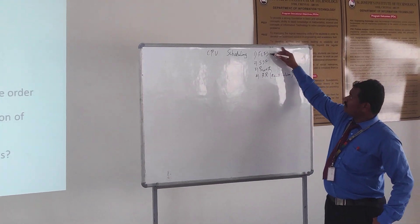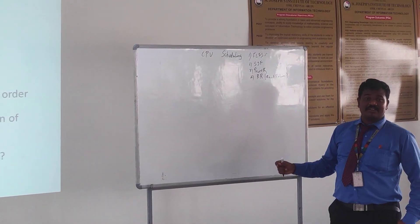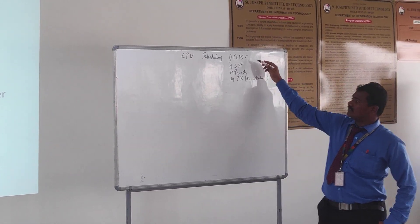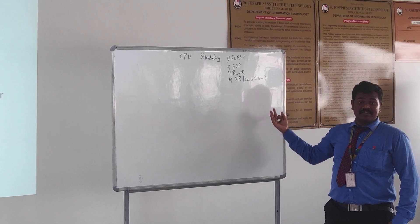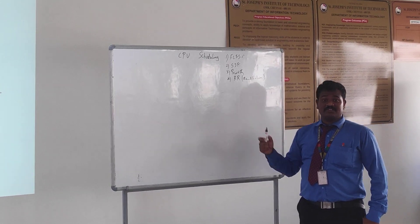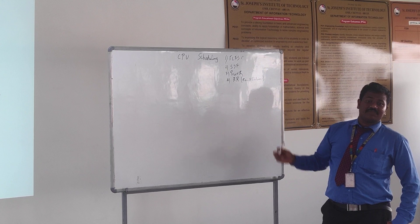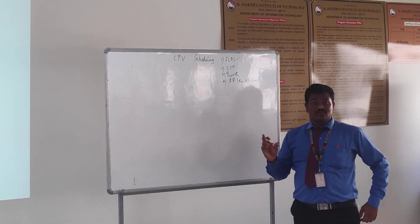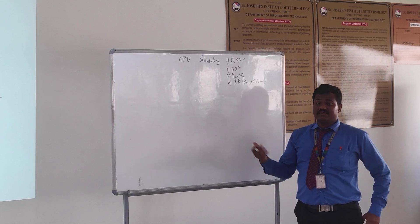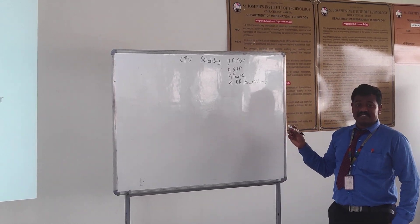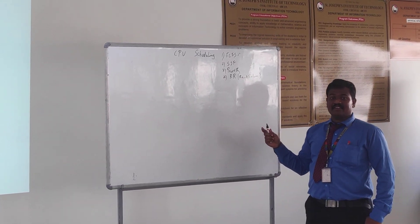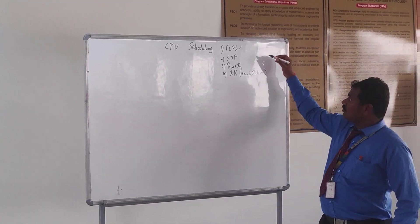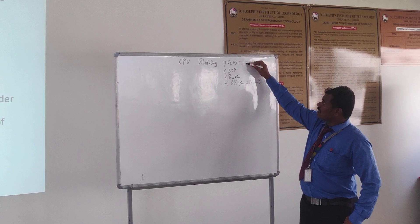The first CPU scheduling algorithm is FCFS, which is nothing but First Come First Serve. The drawback is that the process which comes first will be served first and scheduled first. So in FCFS, if a process with a huge burst time comes first, then all other processes with shorter burst times will have to wait a long time. This will lead to starvation.